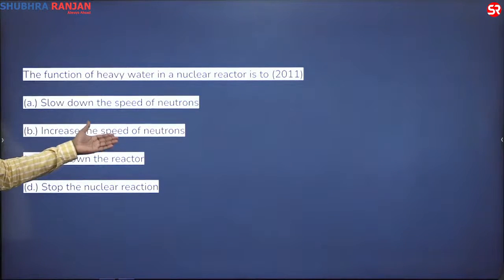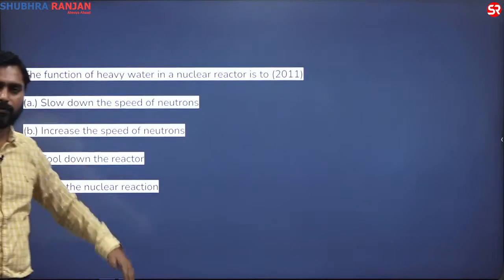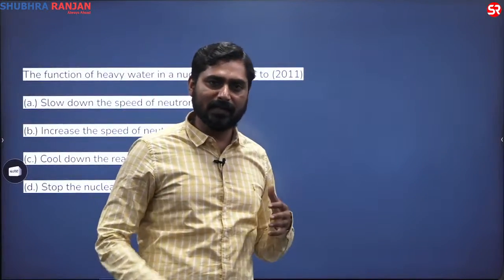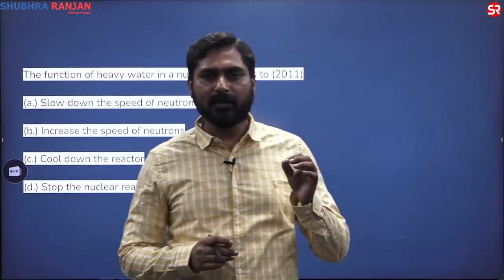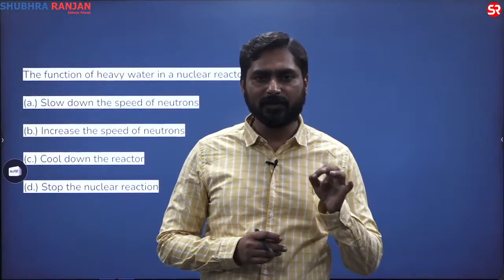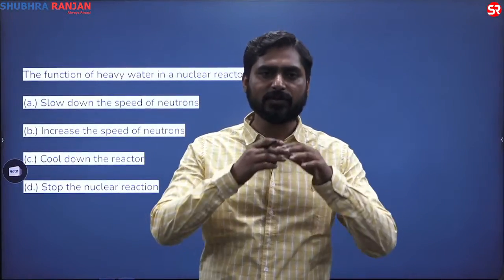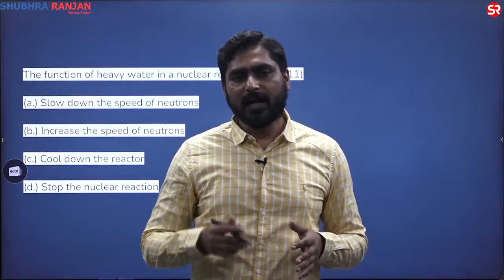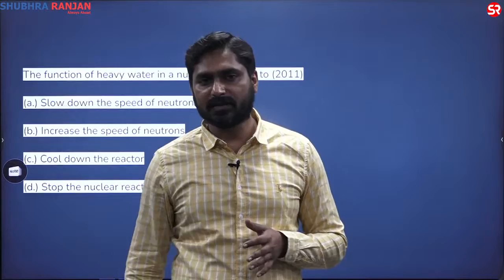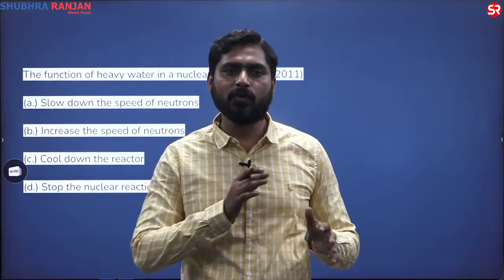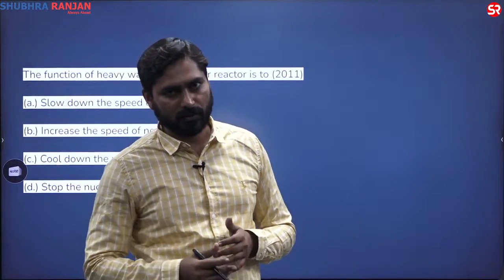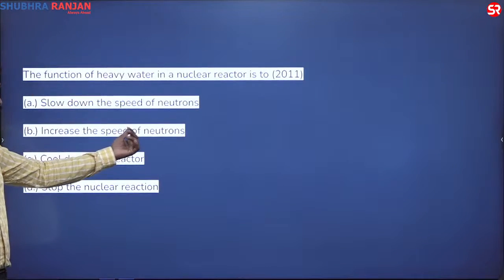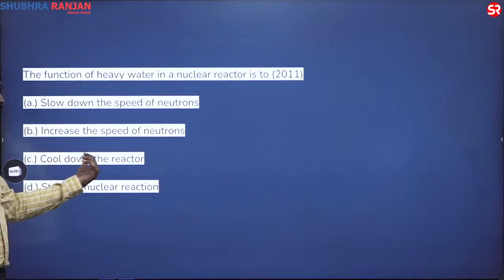The challenge in fission is that when you hit a fissile material with a neutron, it produces more neutrons which hit more fissile material, leading to a chain reaction. We actually want to control or absorb the neutrons, so increasing speed is incorrect. The third option, 'cool down the reactor,' is also not the main purpose of heavy water.